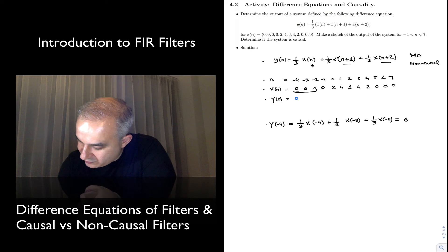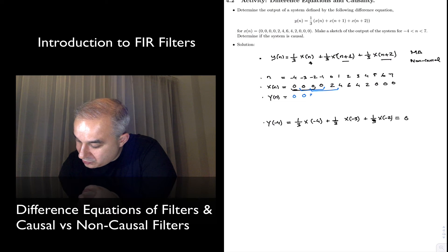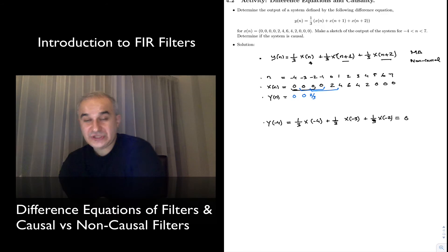Now, we move the window again, by one sample. Same thing, 0. We move it again. And now, in this case, we have 0, 0, but we have a 2. So, we are going to get 2/3, or 0.6667.